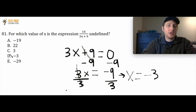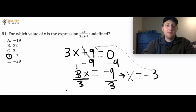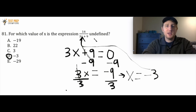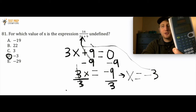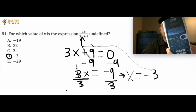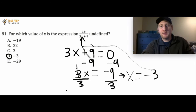So D is the right answer here. The reason this is correct is if I take negative 3 and plug it in for x, I'm going to get a 0 in my denominator. The idea is that you can never divide by 0. If you take your calculator and try any number divided by 0 — like 99 divided by 0 — you're going to get an error message. So you can never divide by 0.